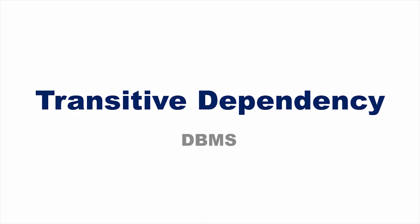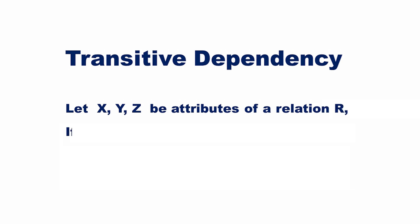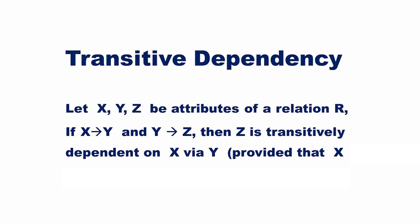In this video, let us discuss transitive dependency. Let X, Y, and Z be attributes of a relation R. If X determines Y and Y determines Z, then Z is transitively dependent on X via Y, provided that X is not functionally dependent on Y or Z.